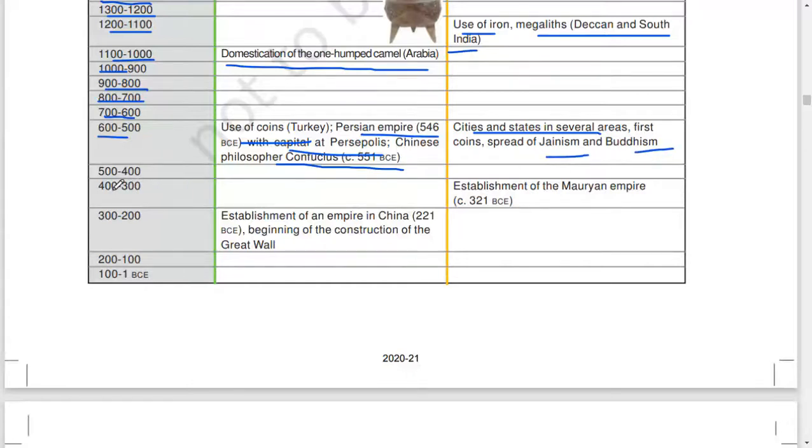500 to 400, 400 to 300: establishment of Mauryan Empire, 321 BCE. 300 to 200: establishment of Empire of China, 221 BCE, beginning of the construction of the Great Wall. 200 to 100, 100 to 1 BCE.